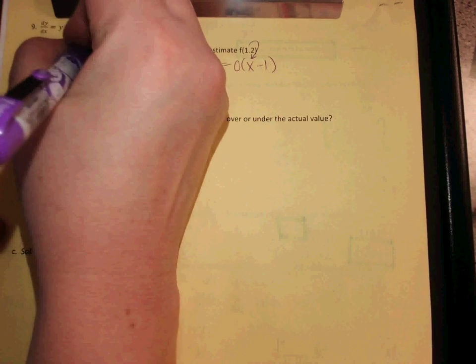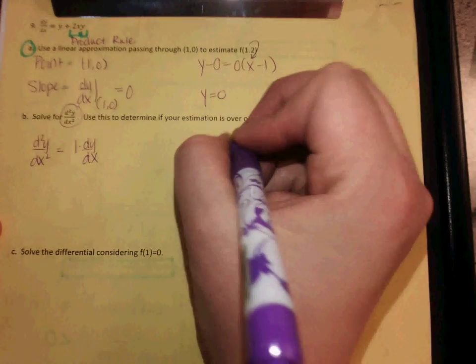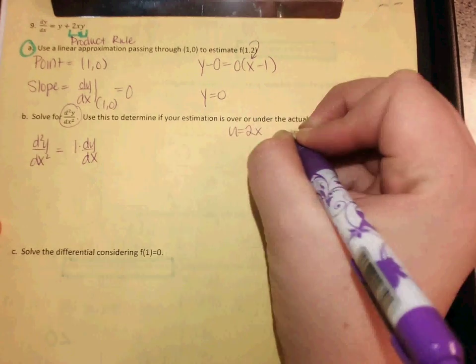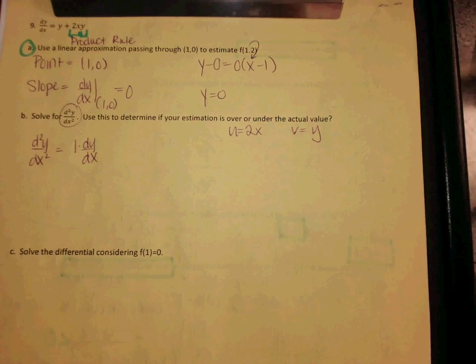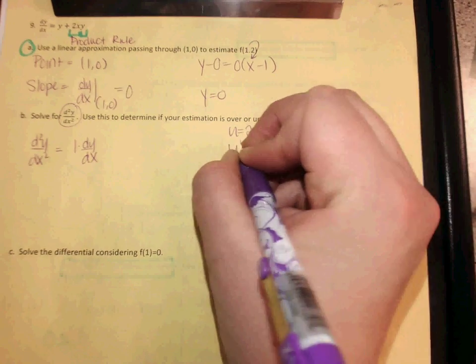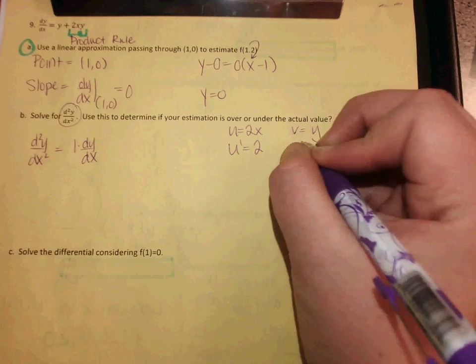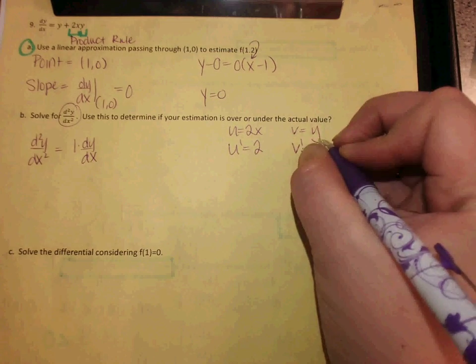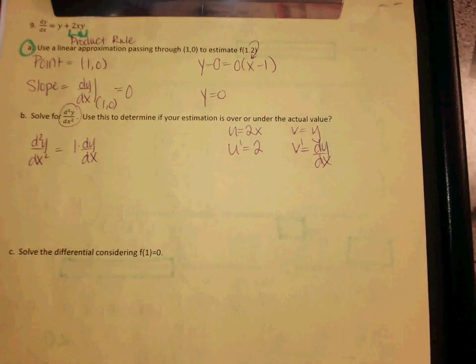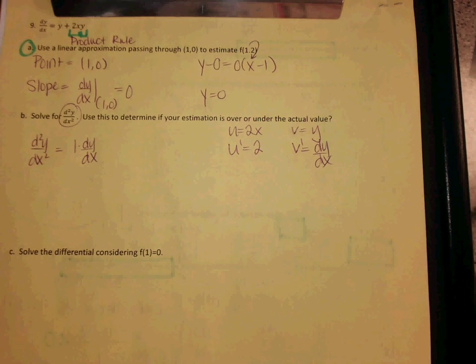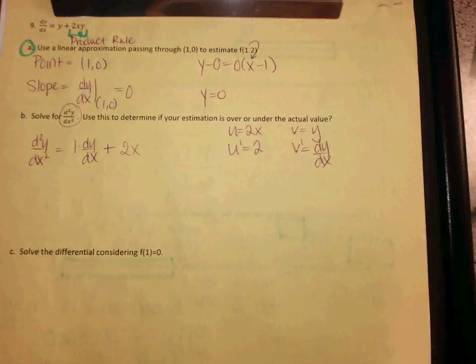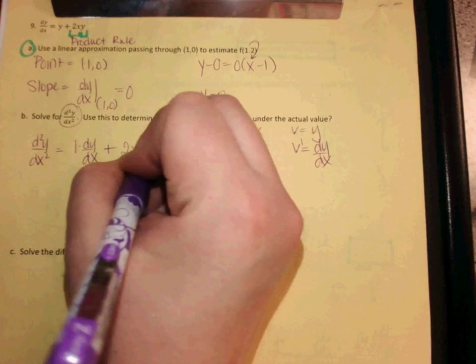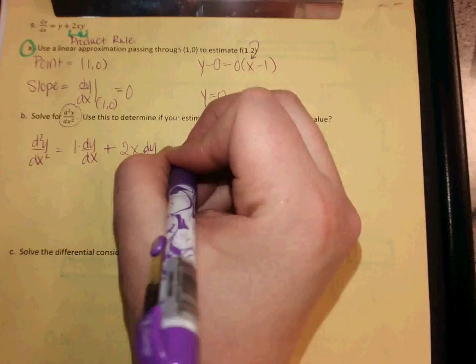Product rule. Very good. You're going to have to do product rule when you take the derivative of that. So my u is going to be 2x. My v is going to be y. If u is 2x, what is u prime? Just 2. If v is y, what is v prime? dy/dx. And then from there, what do you do? u v prime plus v u prime. So it would be plus 2x dy/dx plus 2y. Very good.